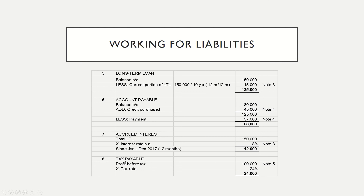Next, proceed with Working 8 for tax payable. The information is given in Note 5. The profit before tax for Zita Berhad for the year 2017 was RM100,000. The company has to pay tax at the rate of 24%, and the tax will be remitted to the Inland Revenue Board by 28th February 2018. Since payment is made in 2018 rather than 2017, we include it as tax payable, amounting to RM24,000 (RM100,000 times 24%).